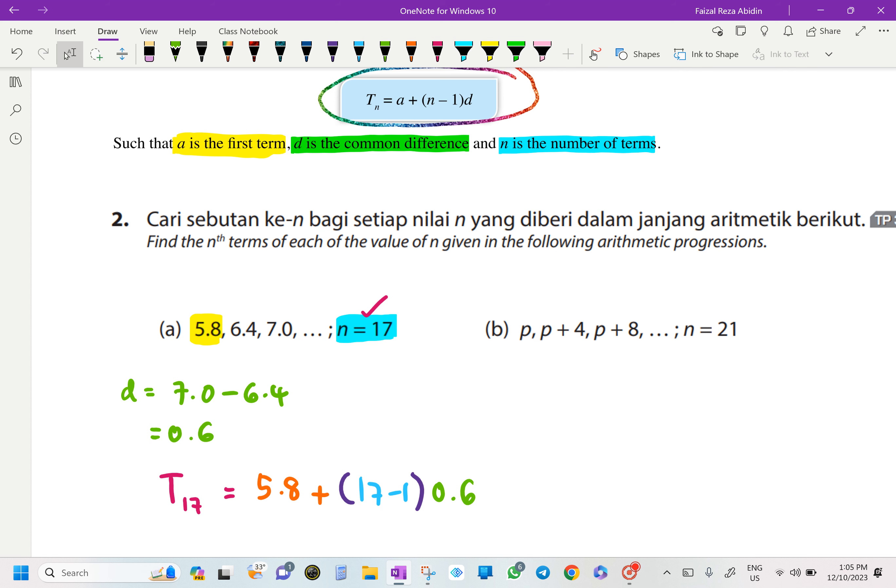This is how you are going to substitute into our formula of the N terms for the arithmetic progression. So find by using your calculator. Use your calculator. You are going to get what? 15.4.